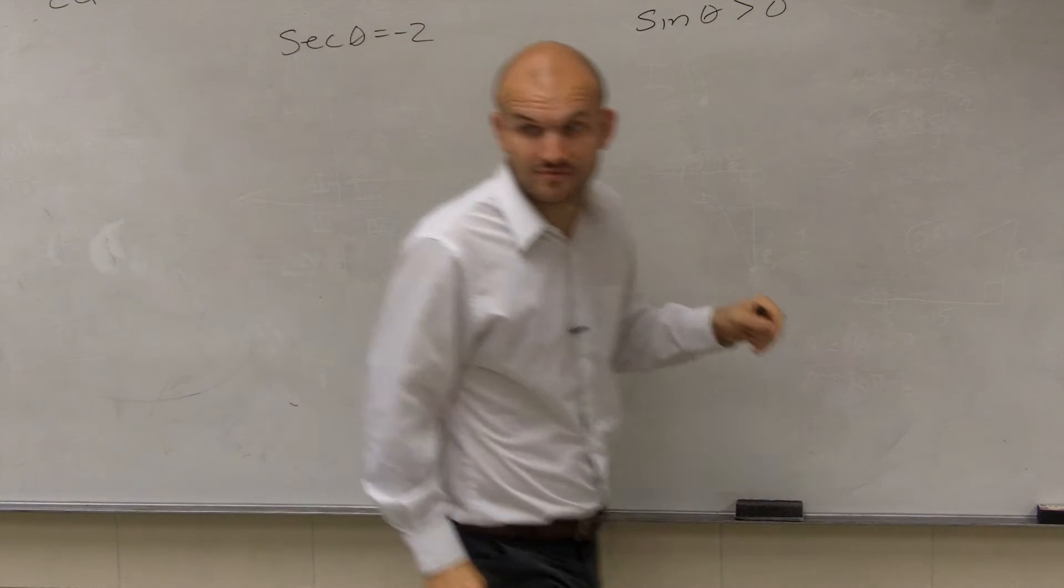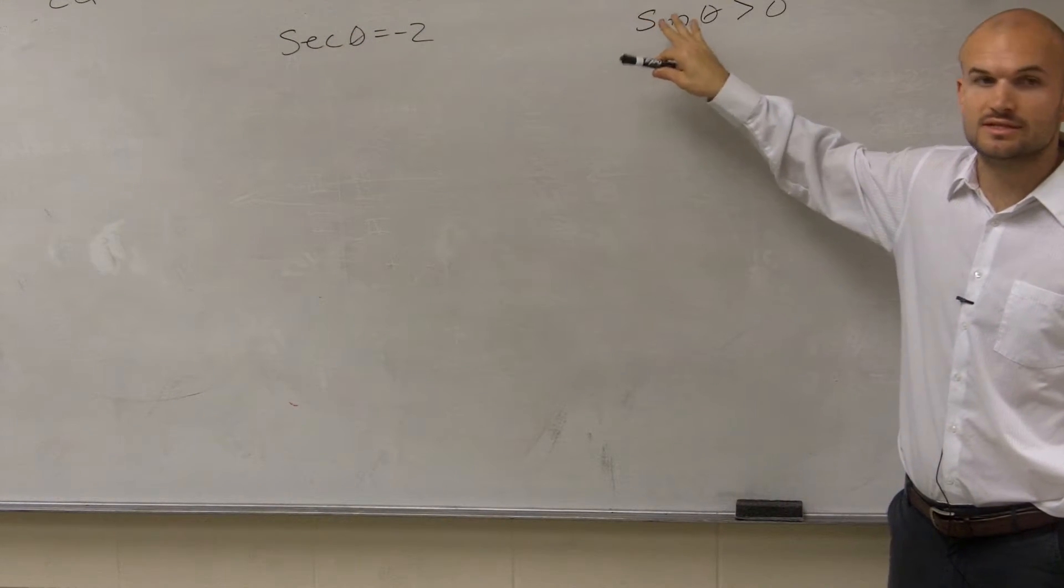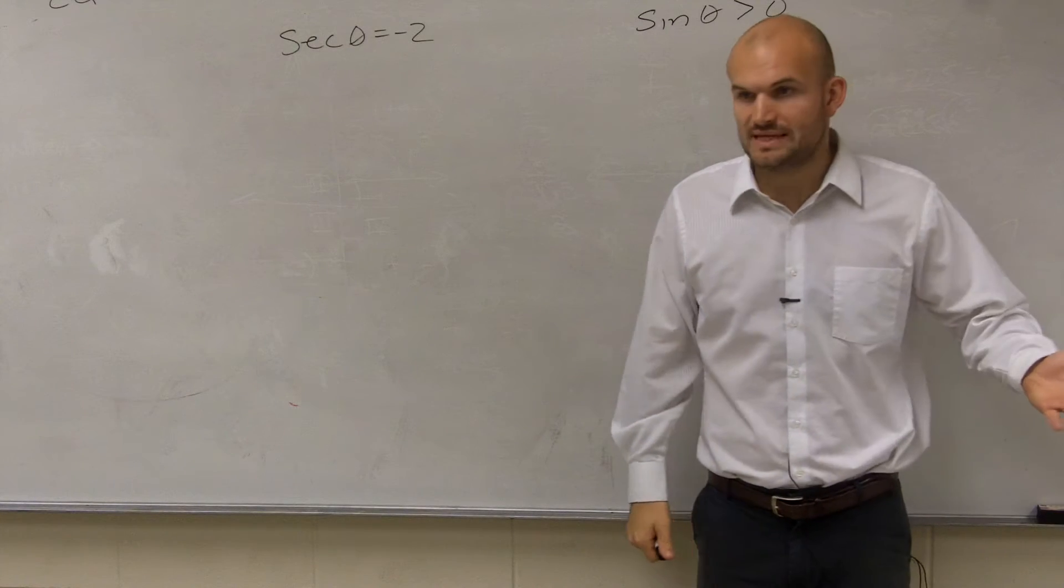This is sine of theta equals negative 2, and this is your constraint. This is going to be the constraint. So the first thing, here's our problem. We have secant of theta equals negative 2. Do we know what the angle is?